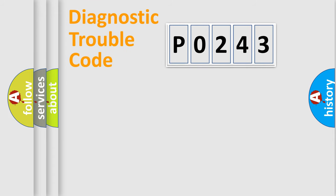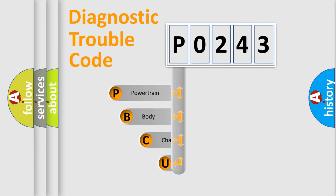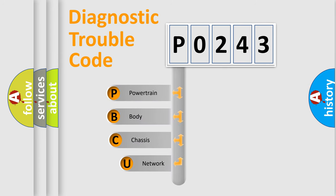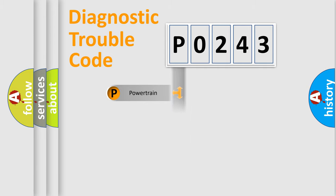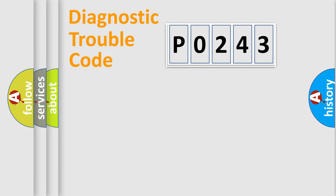Let's do this. First, let's look at the history of diagnostic fault code composition according to the OBD2 protocol, which is unified for all automakers since 2000. We divide the electric system of the automobile into four basic units: Powertrain, Body, Chassis, and Network.